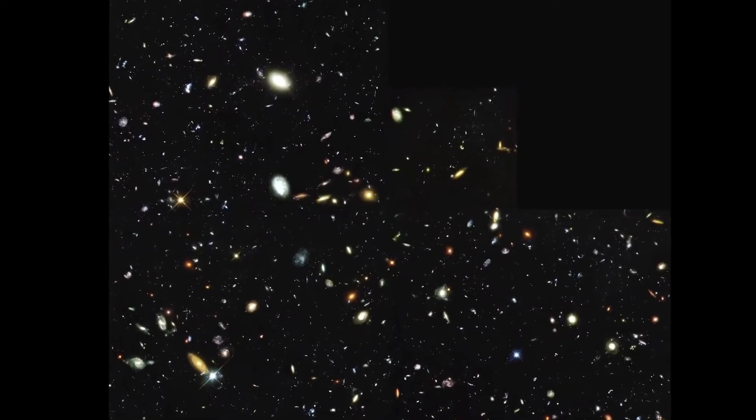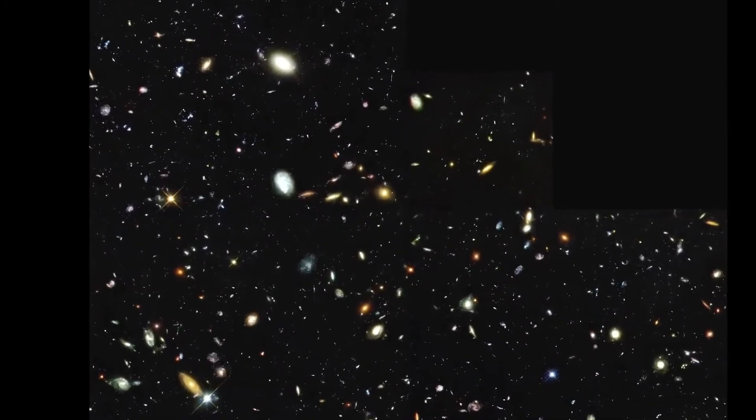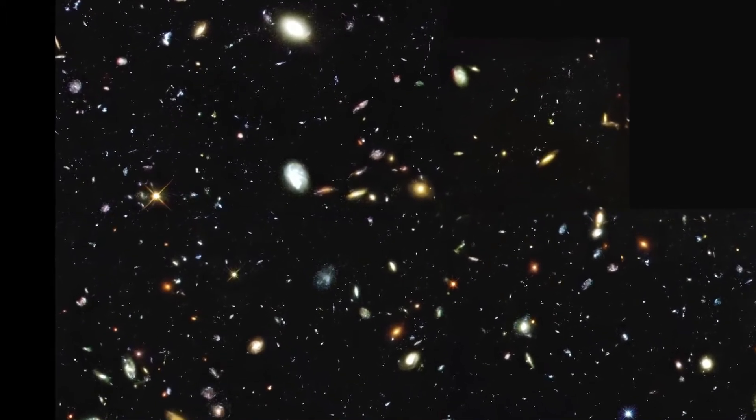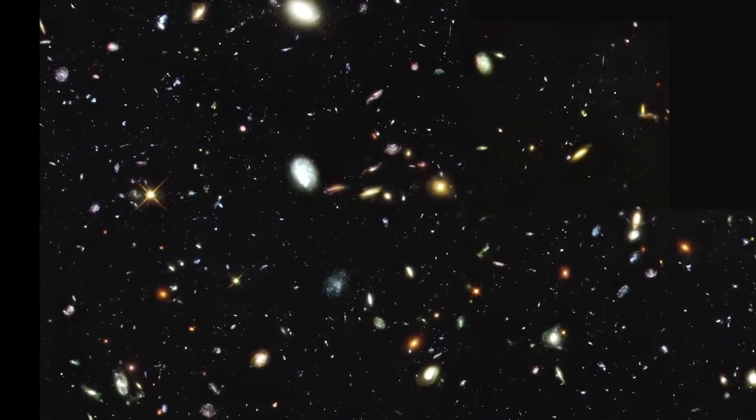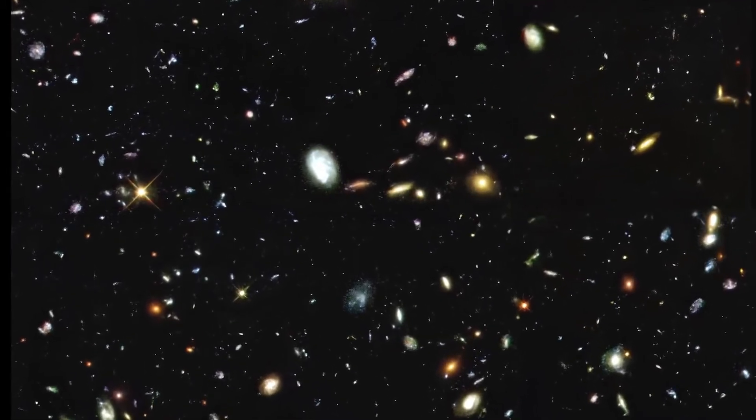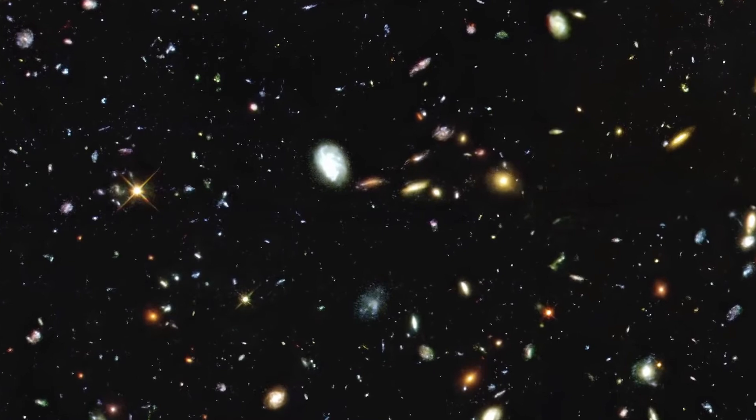The original and now-famous Hubble Deep Field image, released in 1996, consisted of an area of sky with a width equal to just one twelfth that of the full Moon. In it, Hubble found almost 3,000 distant galaxies.